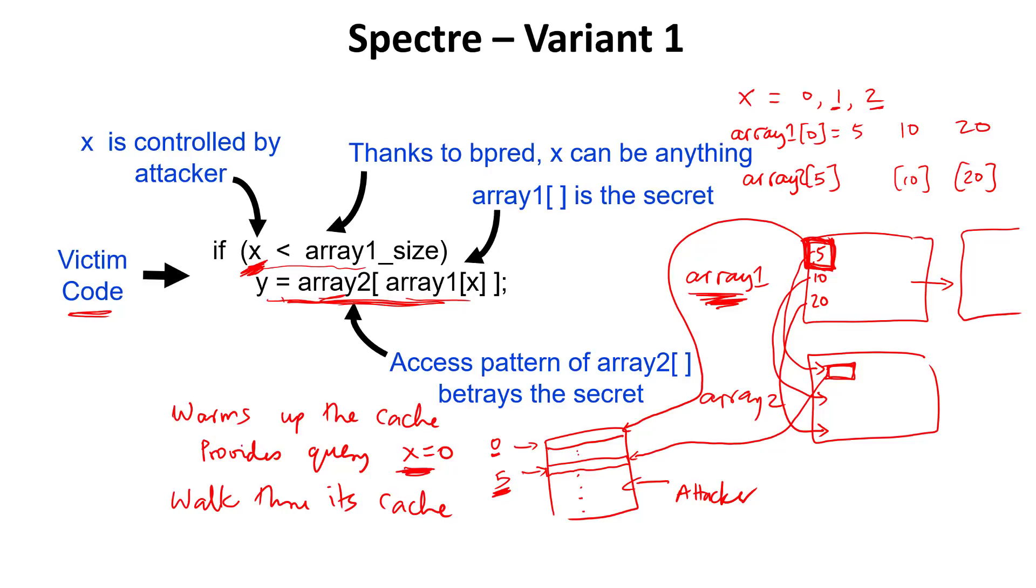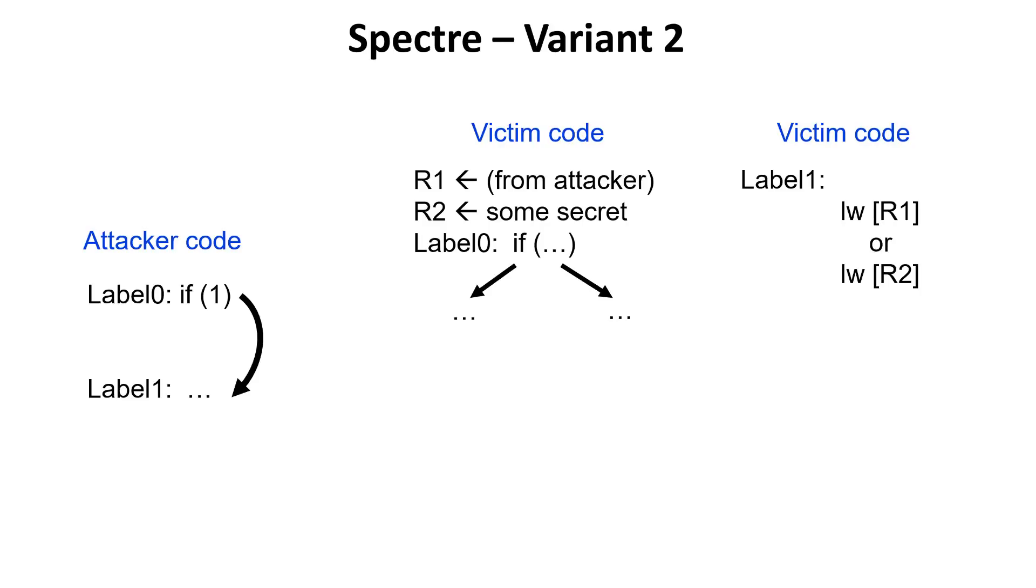Now let's look at a second example that's equally diabolical. Here's the victim's code. Let's say that register R1 is a value that the attacker can control. And let's say that register R2 contains some secret that is internal to the victim, like some secret key. The victim then arrives at this branch statement, which is at label 0, and it chooses to either go left or right. Within the victim code, there is some other remote location in the code at label 1 where there's a load to an address that's situated in register R2. There may be some code over here that sets the value of R2.